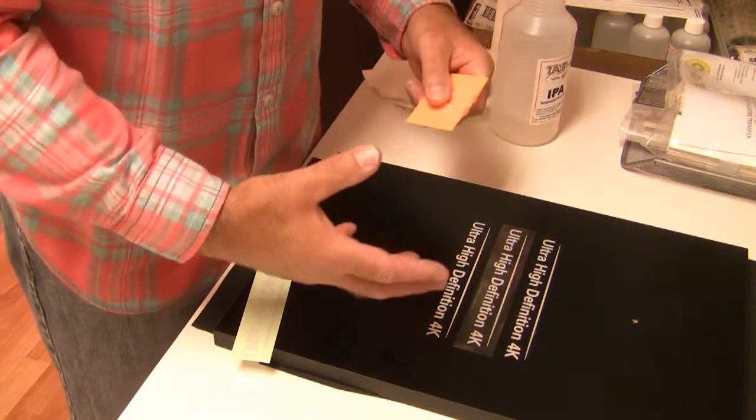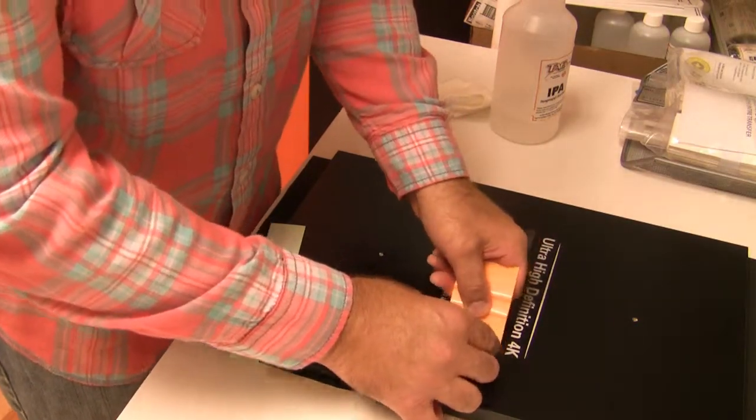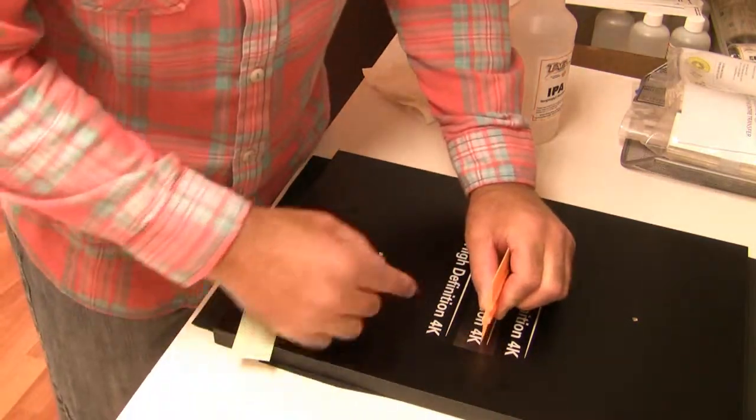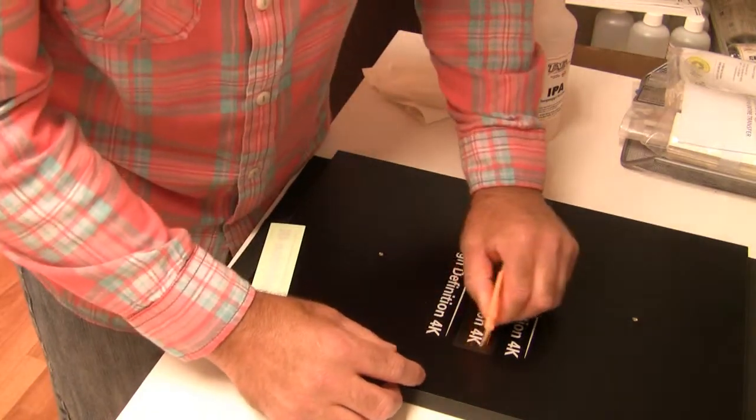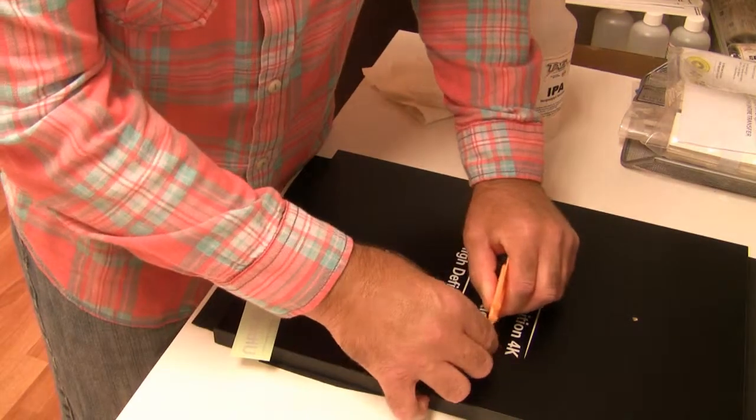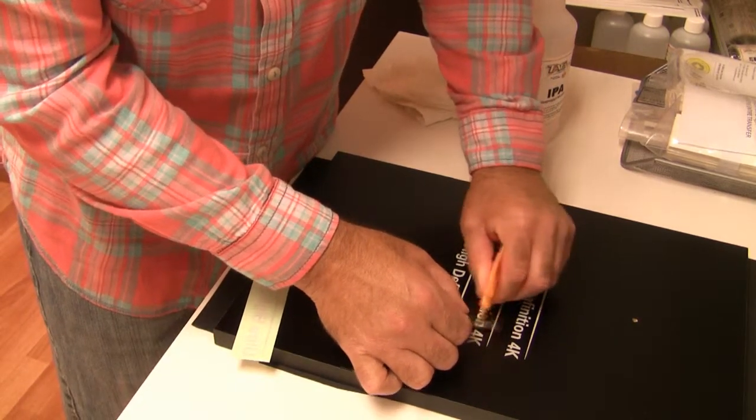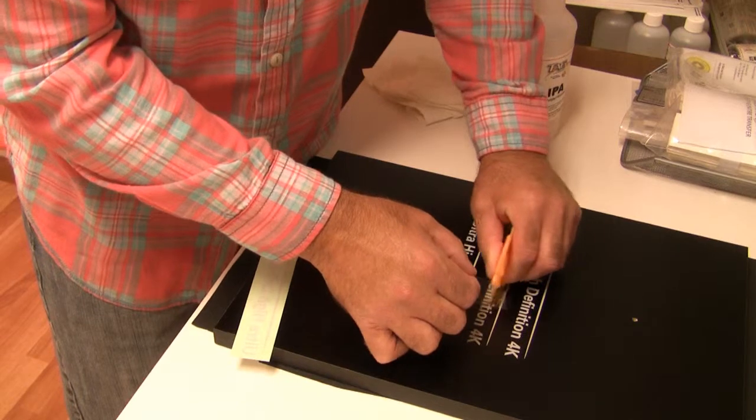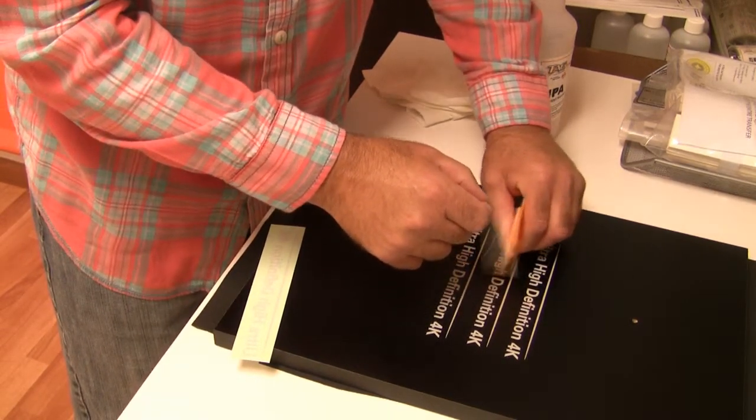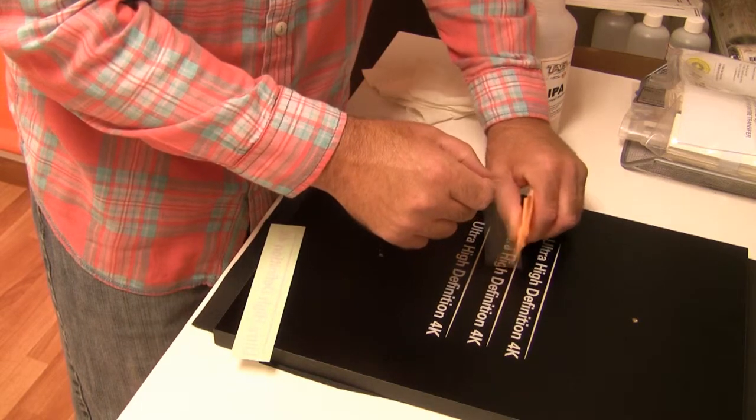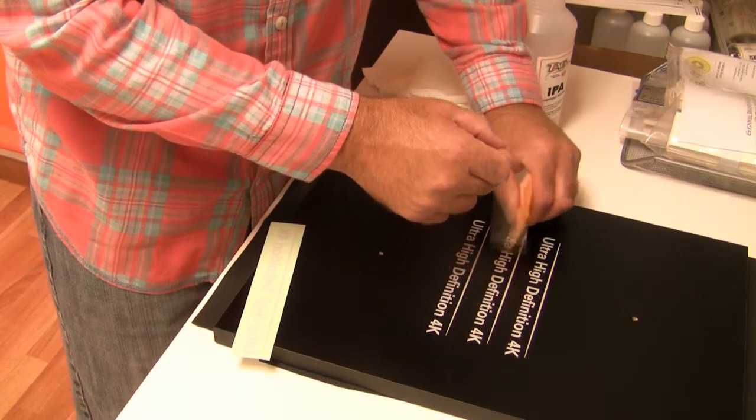Now, if for some reason you can't get it to release, another thing you can do is lift the corner, run the squeegee so that it's running parallel to the graphic, and then just burnish back and forth, lift the edge, and then as you move and lift the clear carrier stock, just burnish right behind the edge of the clear carrier stock.